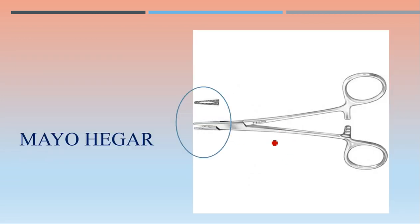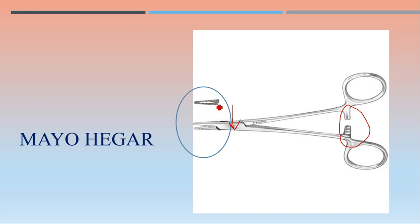Then the Mayo-Hegar needle holder — focus on the presence of lock, the fulcrum or joint, and the tip where you can see a depression or eye along with serrations on both jaws. This is the Mayo-Hegar needle holder.